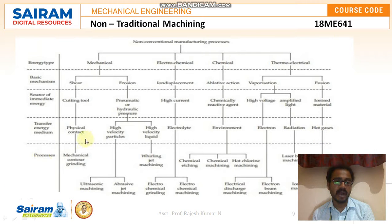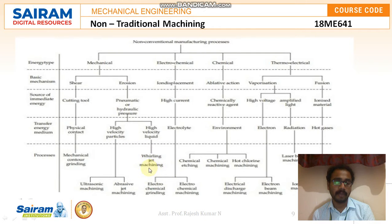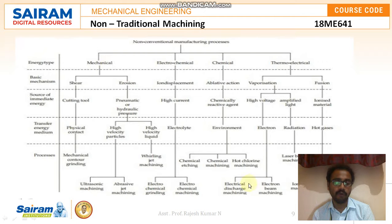Under physical contact, mechanical contour grinding is the preferred process. Under high velocity particles, ultrasonic machining and abrasive jet machining are the processes, which we will discuss in module 2. Under high velocity liquid, water jet machining is a popular process, though not part of our syllabus. Under the electrochemical electrolyte energy transfer medium, we will discuss two processes: electrochemical grinding and electrochemical machining, which will be part of our syllabus covered in modules 3 and 4.